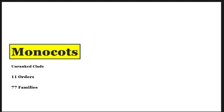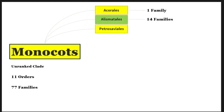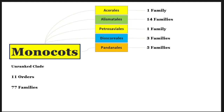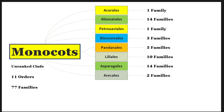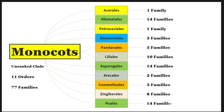Monocots is a group of plants without any specific rank but with eleven orders comprising 77 families. The eleven orders are: Acorales with one family, Alismatales with 14 families, Petrosaviales with one family, Dioscoreales with three families, Pandanales with five families, Liliales with ten families, Asparagales with 14 families, Arecales with two families, Commelinales with five families, Zingiberales with eight families, and Poales with 14 families. Among them, Arecales, Commelinales, Zingiberales, and Poales are subclades that come under another subclade called Commelinids. Ceratophyllales is another order between monocots and eudicots.